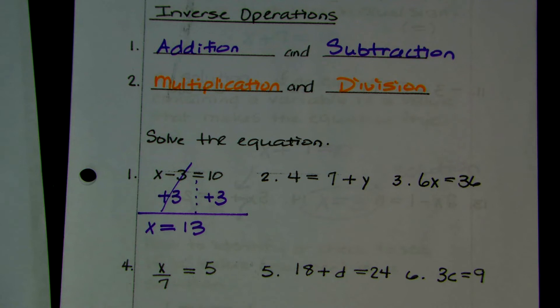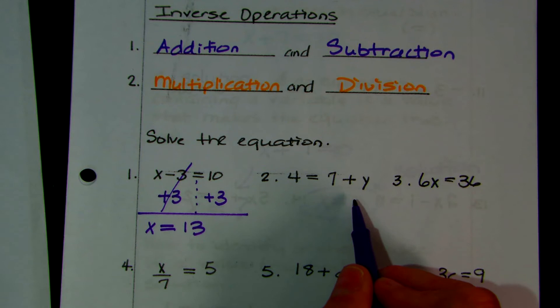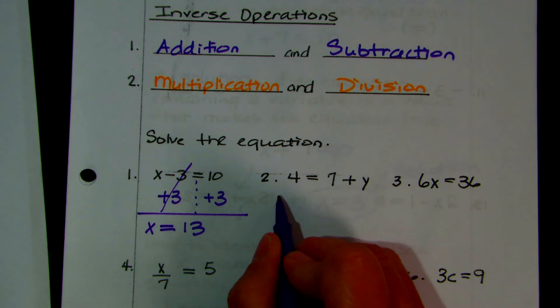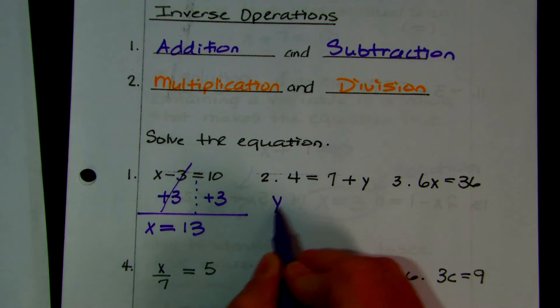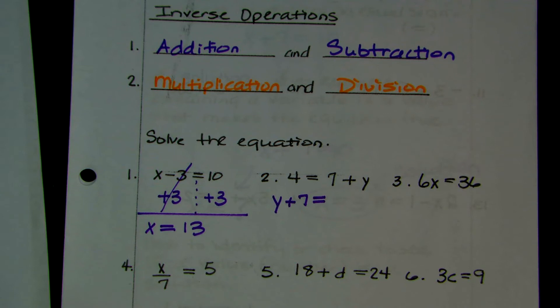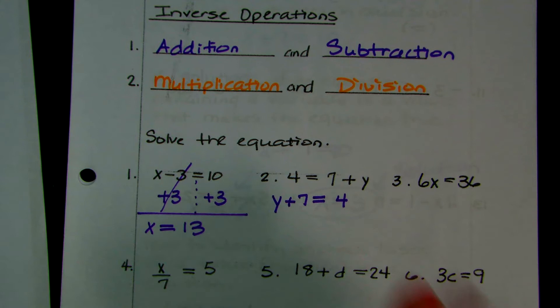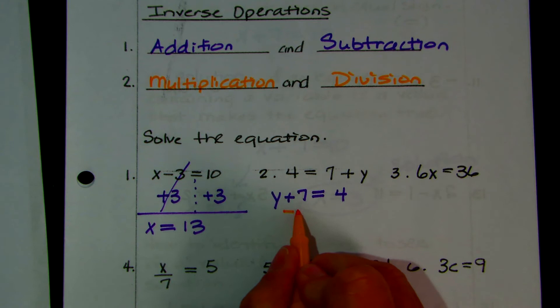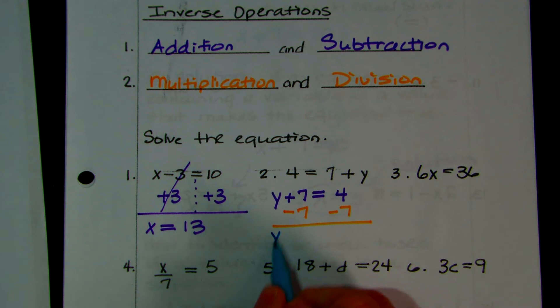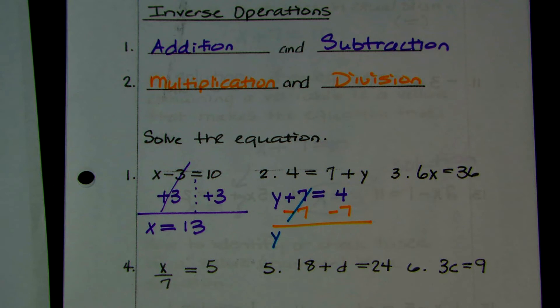This is written kind of strange — you're going to see things like that. We can switch it because we've learned those properties. 7 plus y is the same as y plus 7, equals 4. So y plus 7 — how do we move 7 to the other side? We use an inverse operation, the opposite. The opposite of addition is subtraction. So y comes down, 7 minus 7 are inverses and add out to give you 0. Bring down your equal sign, and 4 minus 7 would be negative 3.